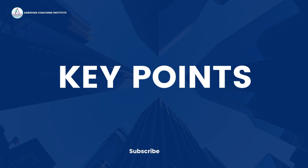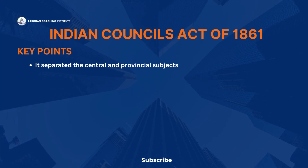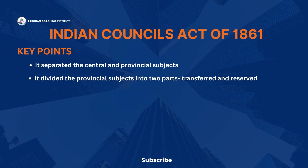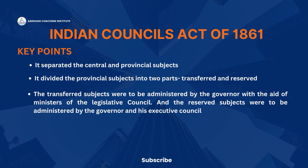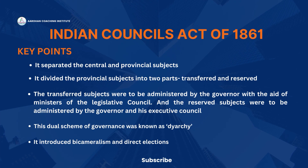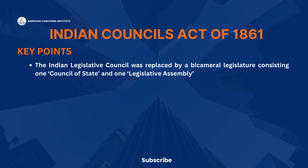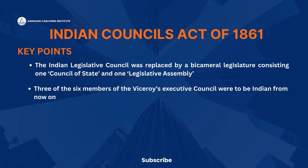Now let's look into the key points of the Act. Firstly, it separated the central and provincial subjects. Secondly, it divided the provincial subjects into transferred and reserved. The transferred subjects were administered by the Governor with the aid of ministers of the Legislative Council, and the reserved subjects by the Governor and his Executive Council. This dual scheme of governance was known as Diarchy. It introduced bicameralism and direct elections; the Indian Legislative Council was replaced by a bicameral legislature consisting of a Council of State and a Legislative Assembly. Three of the six members of the Viceroy's Executive Council were to be Indian.